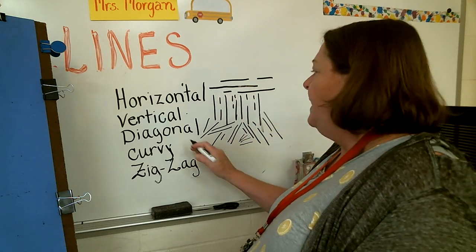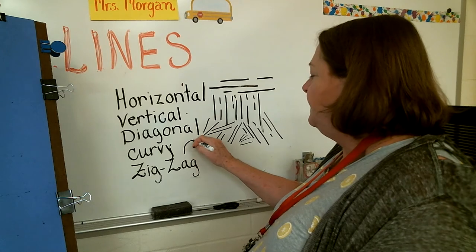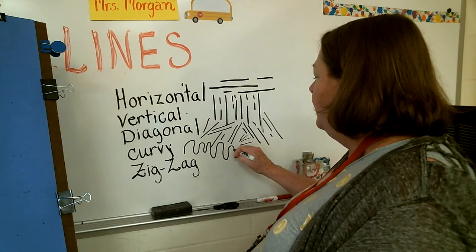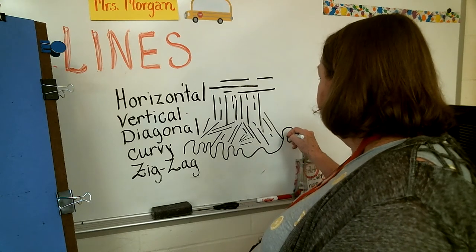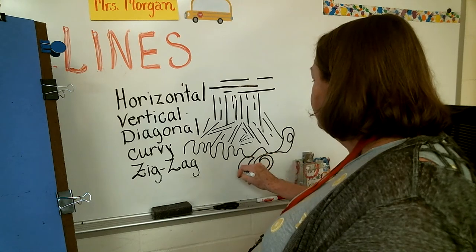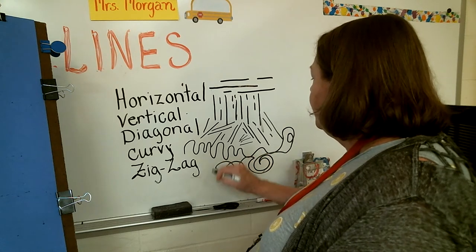The curvy lines are made like this, and they do what the word says. They curve. And they can do spirally curves. They can make loopy curves.